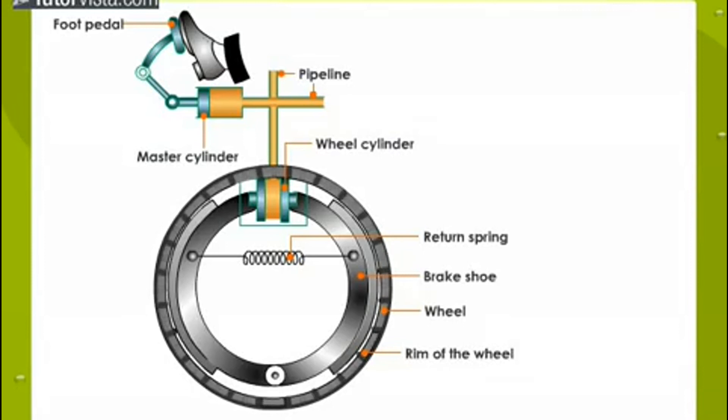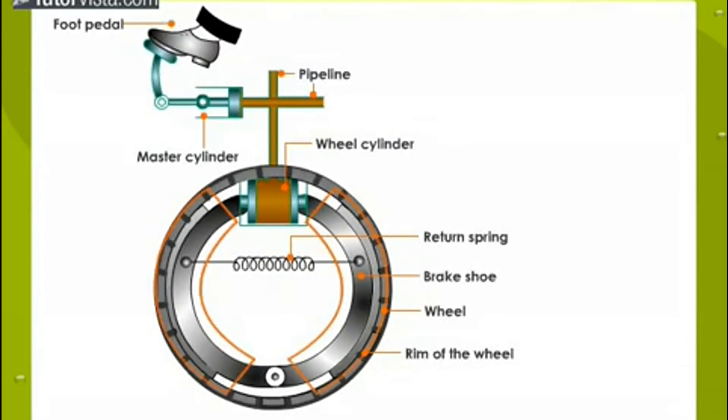When the brakes are applied, the foot pedal is pushed, exerting pressure on the fluid in the master cylinder. This pressure is transmitted equally and undiminished throughout the fluid and to the pistons of the wheel cylinder. Therefore, the pistons get pushed outwards and the brake shoes get pressed against the rim of the wheel, causing the motion to retard.